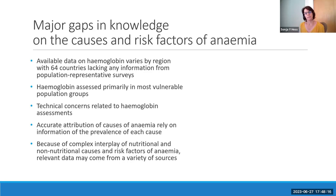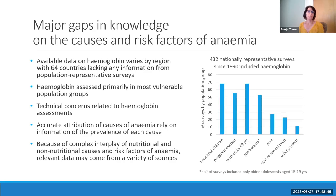A major gap in our knowledge of anemia is that we don't have a lot of information. A recent paper by Stevens, done for the World Health Organization, found about half a billion women are at risk of or have anemia, and about 269 million children. But this information comes from about 430 surveys, and 64 countries have no information at all on anemia in the past 10 to 20 years. We know more about anemia burden in preschool children and women, but much less among men, school-age children, and elderly people.